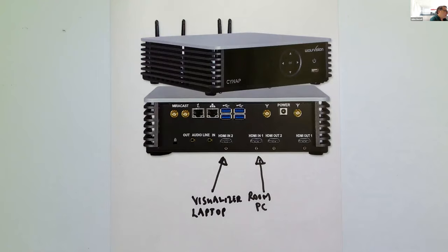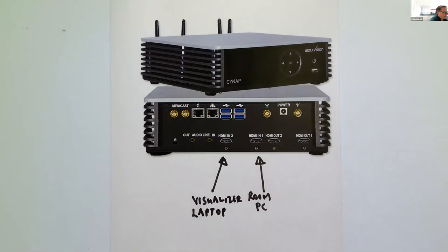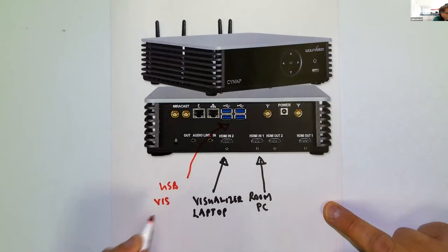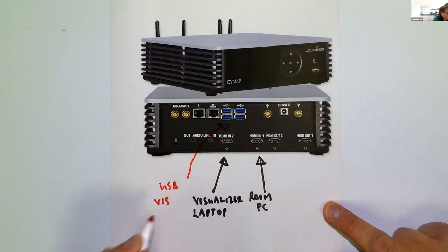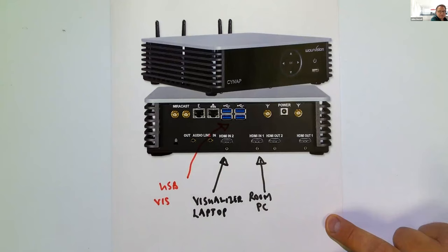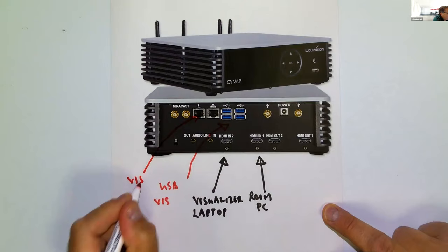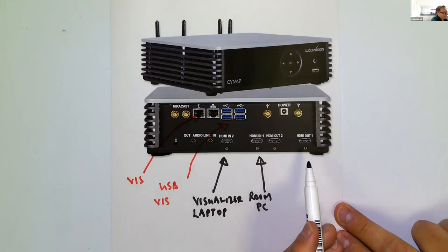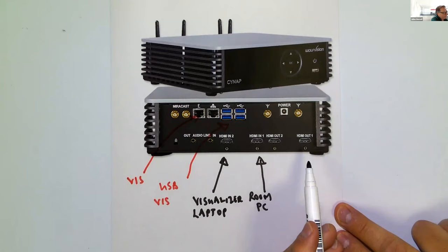Rather than using the HDMI connection for the visualizer, you could also use one of the USB connections — all our units are UVC-enabled, so you can connect the visualizer via USB. Alternatively, you can use the visualizer via one of the LAN ports by setting up an input stream to show the visualizer from there.